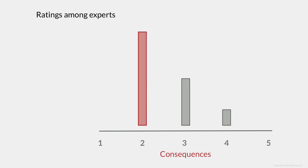If we go back to the likelihood and consequences matrix and look at those consequences, here again we have our ratings among experts. When looking at one risk in particular, you'll see that most experts rated it as a 2, a few as a 3, and maybe one or two as a 4. We can come to a conclusion about the final rating by structuring follow-up interviews or, in the case of Delphi, making available the opinions of others to reach consensus around the consequences rating. Ultimately, we're after a single consequences rating and a single likelihood rating to determine an overall risk rating.